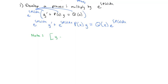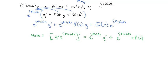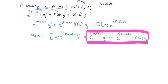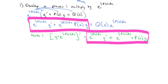What if I took y times e to the integral of p of x dx and took its derivative? What's neat about this derivative is it's a product rule. We have y times e to the stuff. The product rule says we take the derivative of the first, which is y prime, times the other stuff, which is e to the integral of p of x dx. And then we add the derivative of the second part. The derivative of e to the stuff is e to the stuff — e to the integral of p of x dx — times the derivative of that inside stuff. The derivative of the integral is just p of x, times the first part, which is y. Notice that is exactly what we have on the left side of the equation.